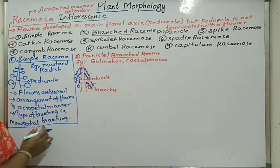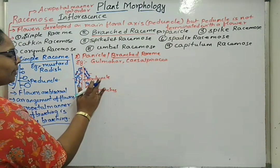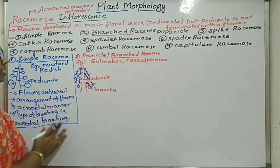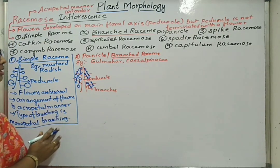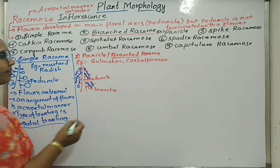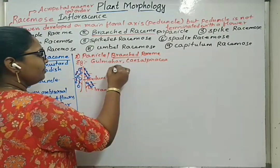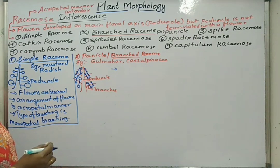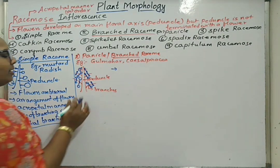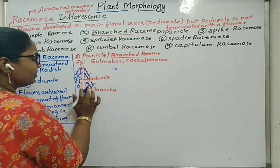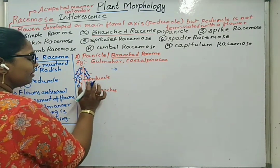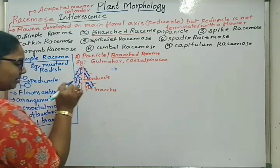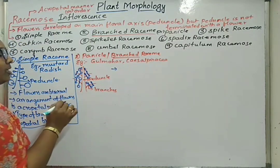Here at any branch, we don't see the tip part terminating with a flower. So here also it is monopodial only. Flowers are bisexual, but all flowers will be having a stalk to hold.